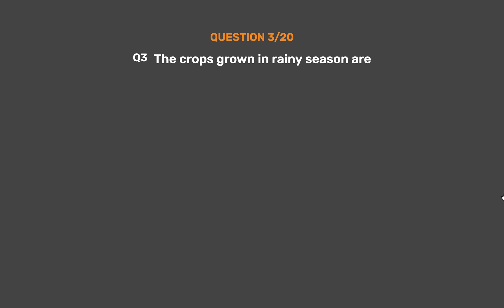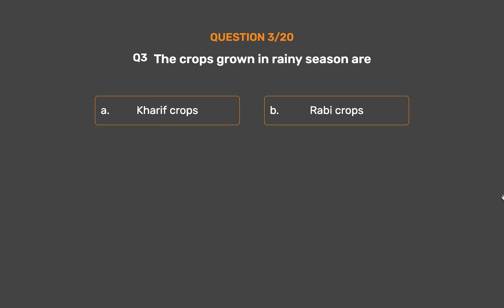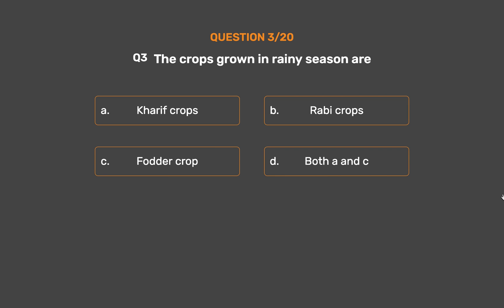Question No. 3. The crops grown in the rainy season are — Option A: Kharif crops. Option B: Rabi crops. Option C: Fodder crops. Option D: Both A and C.